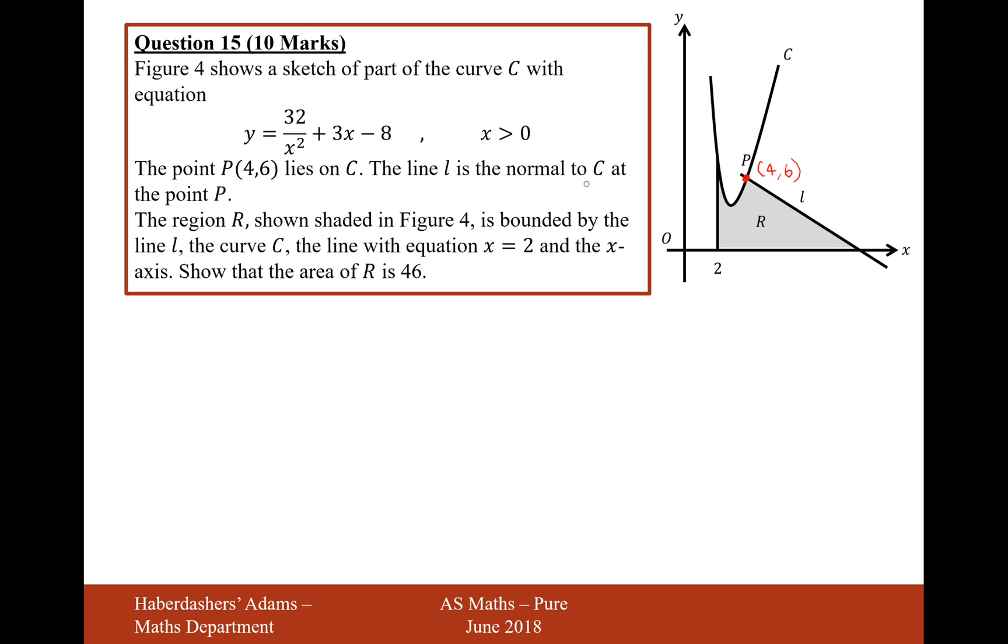The line L is a normal to the curve C at the point P. The region R, shown shaded in figure 4, is bounded by the line L, the curve C, the line with equation x equals 2, and the x-axis. Show that the area of R is 46.